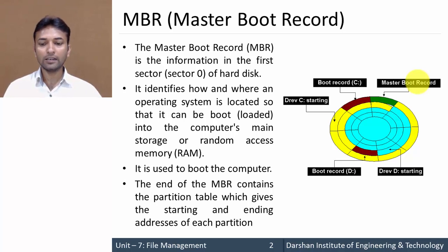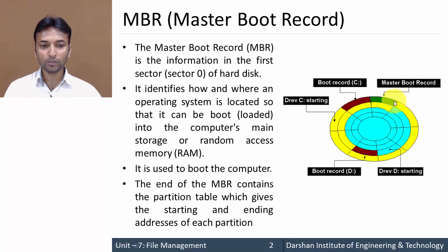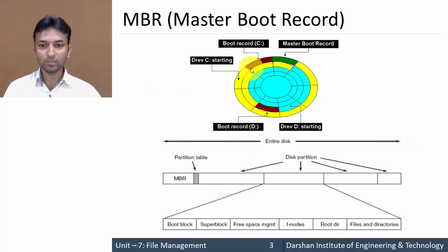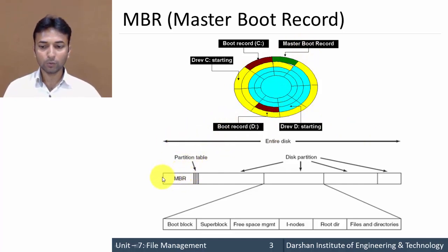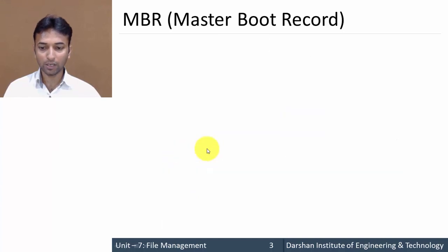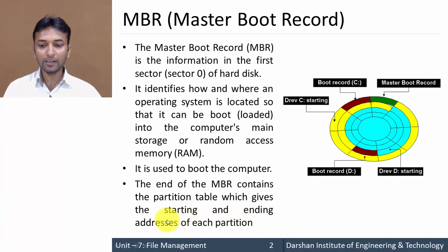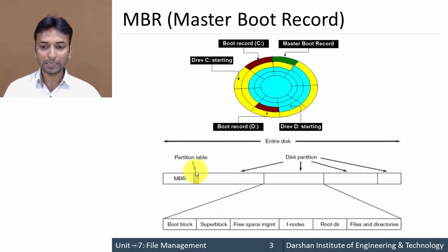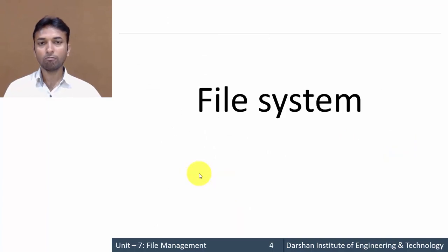The end of the Master Boot Record contains a partition table, which gives the starting and ending address of each partition. Here in the structure of our hard disk, the first sector contains the Master Boot Record, and at the end of the MBR there is a partition table holding the starting and ending address of each partition.